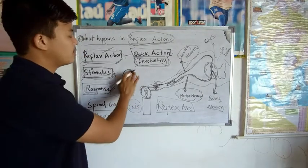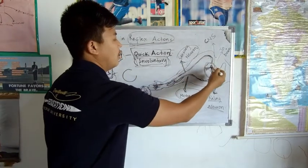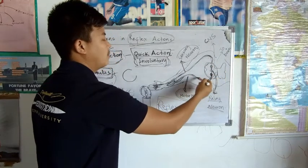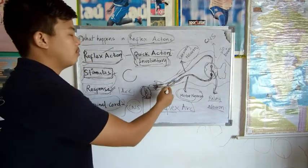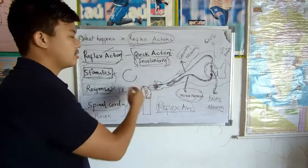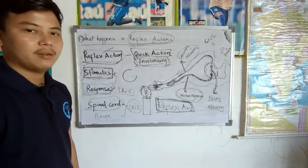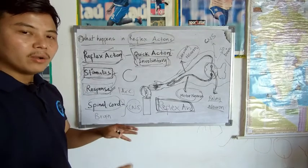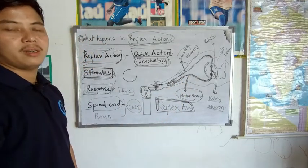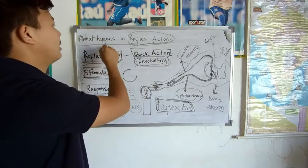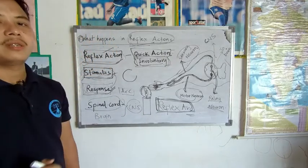Consider a geometrical figure: a full circle, but if it is only half, it is called an arc. Similarly, the signal is taken through the sensory neuron, connected to the relay neuron, and brought back to the motor neuron — it does not complete a full circle but only a part of one. That is why this pathway is called a reflex arc. Reflex means an action done unknowingly, and arc refers to the path of signal transmission. This is what happens in reflex action.